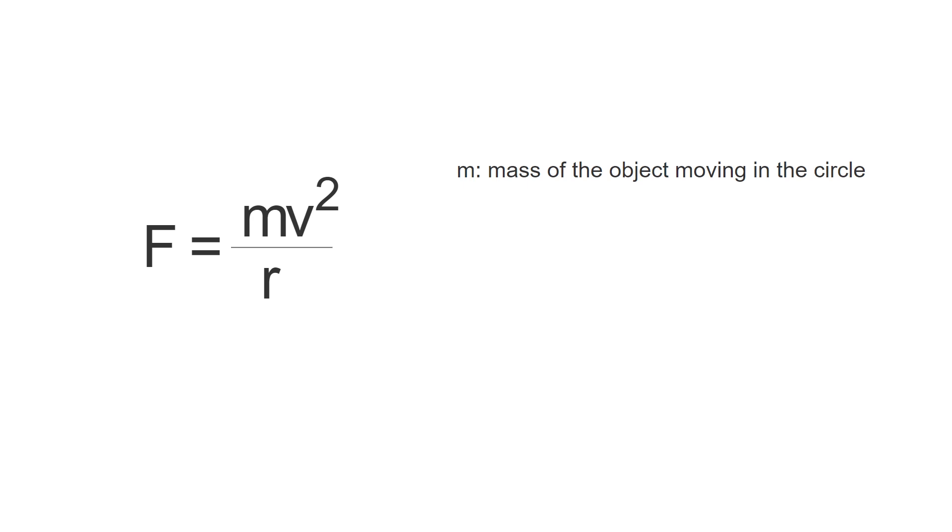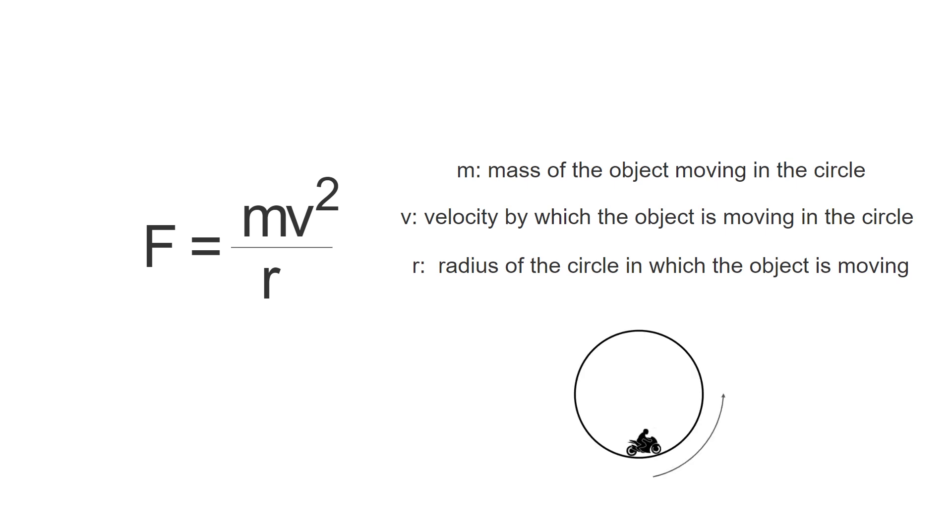Here, m is the mass of the object moving in the circle, v is the velocity by which it is moving in the circle, and r is the radius of the circle in which it is moving. This formula determines the force needed to keep an object in its circular path.